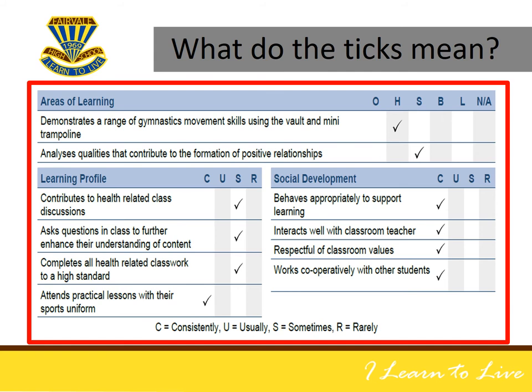In the table below the Areas of Learning, teachers have recorded results and professional judgements indicated by a series of ticks. These ticks are in one of four columns. These columns are C, which means consistently; U, which means usually; S, which means sometimes; and R, which means rarely. The key for these ticks can be seen at the bottom of this table.